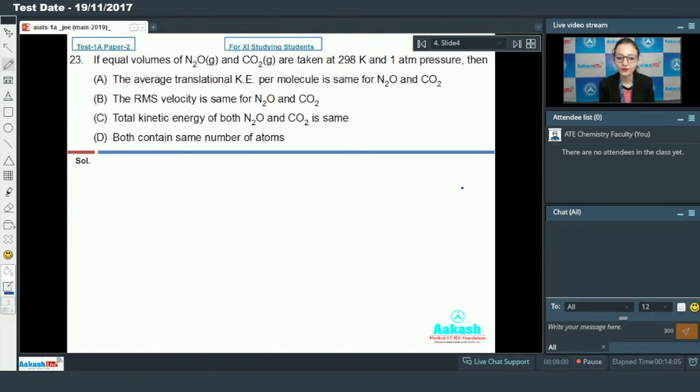Next question, question number 23. If equal volumes of N2O gas and carbon dioxide gas are taken at 298 Kelvin and 1 atm pressure, then we need to analyze the options. Both gases are at same temperature and pressure conditions and also they both have same molecular mass. Molecular mass of CO2 is 44 and molecular mass of N2O is also 44.